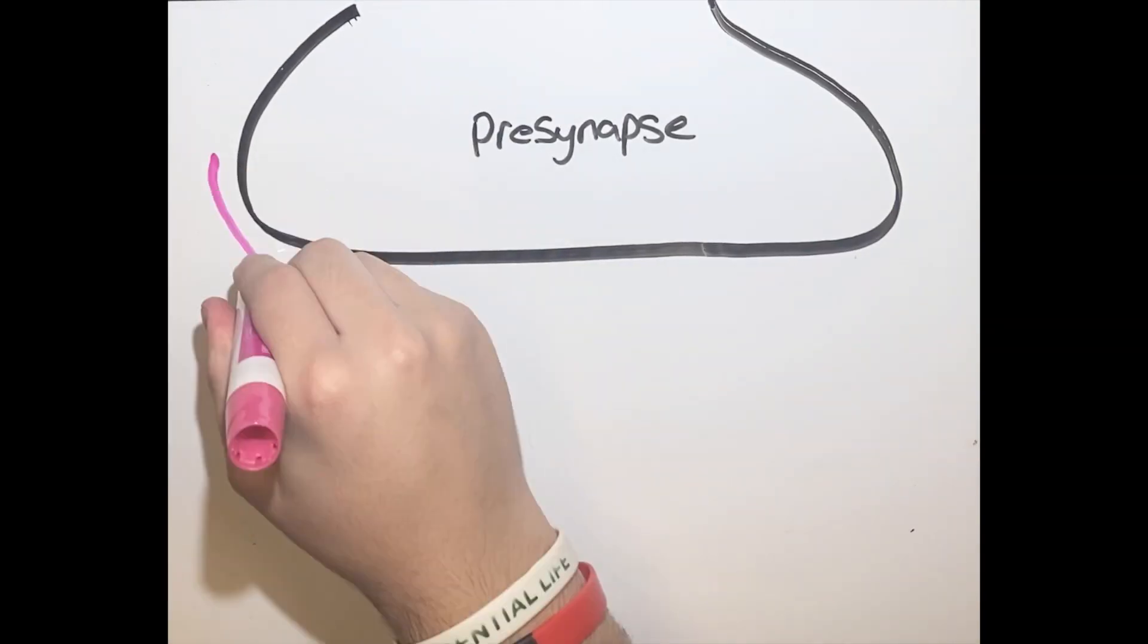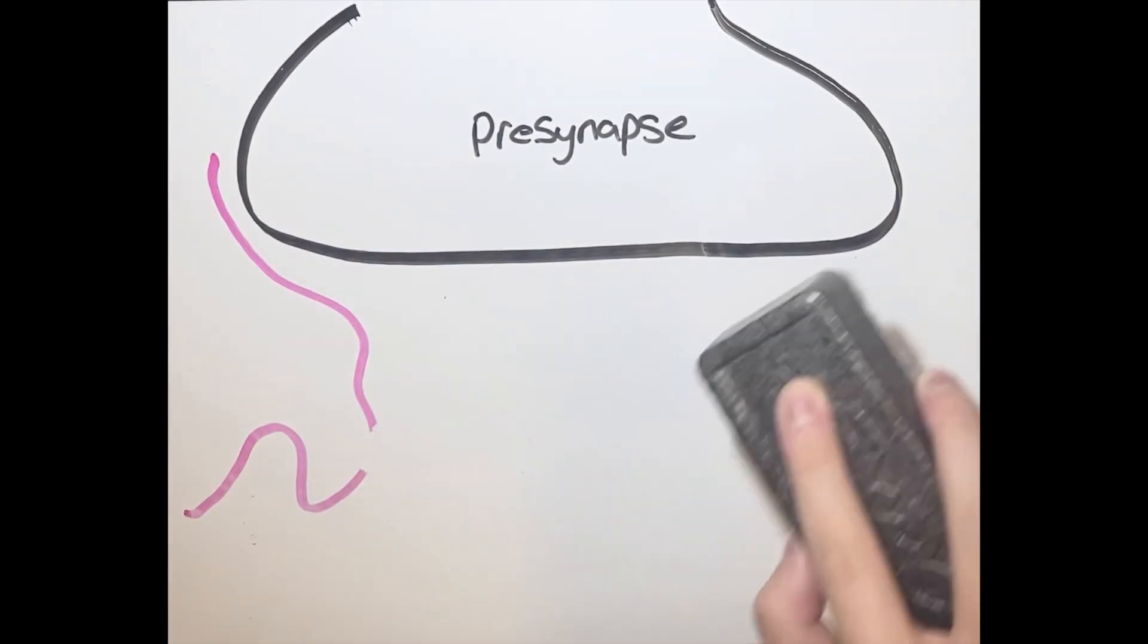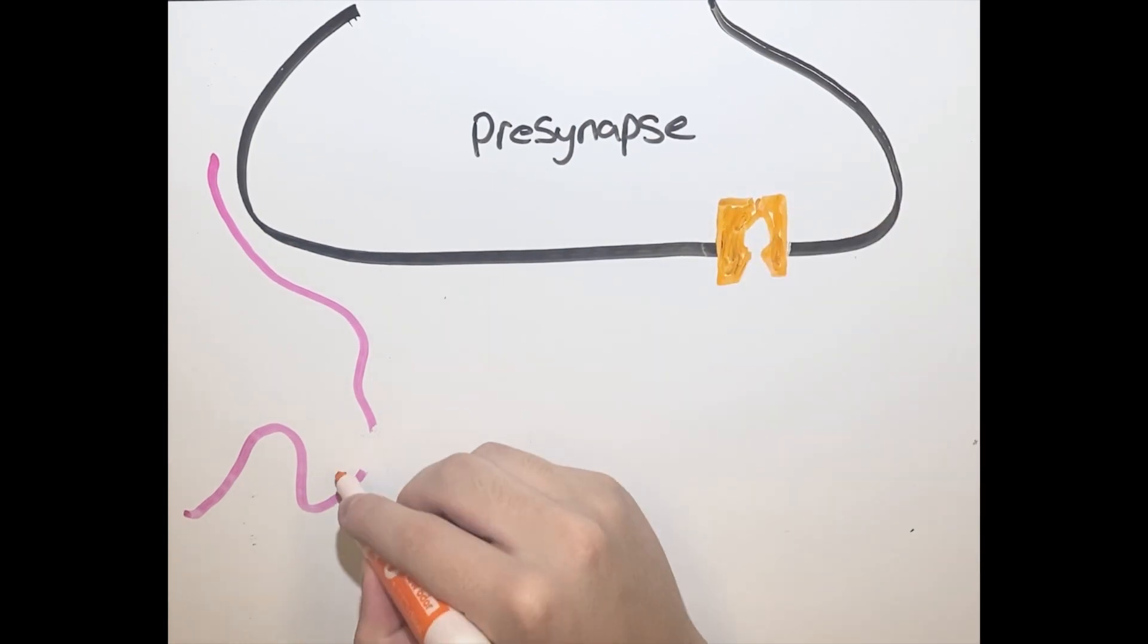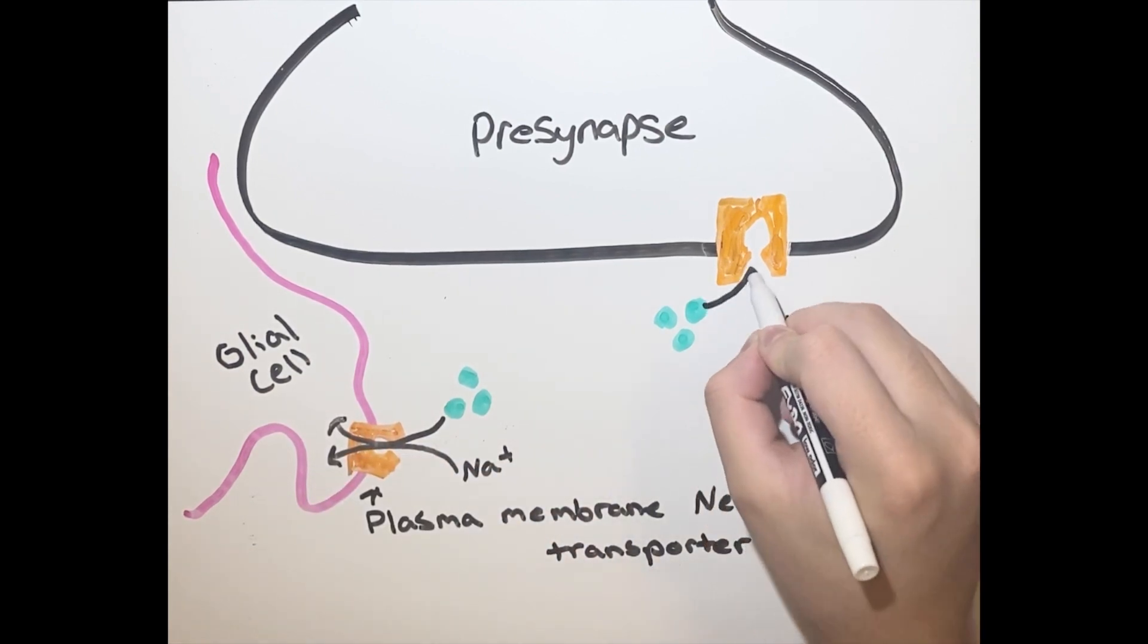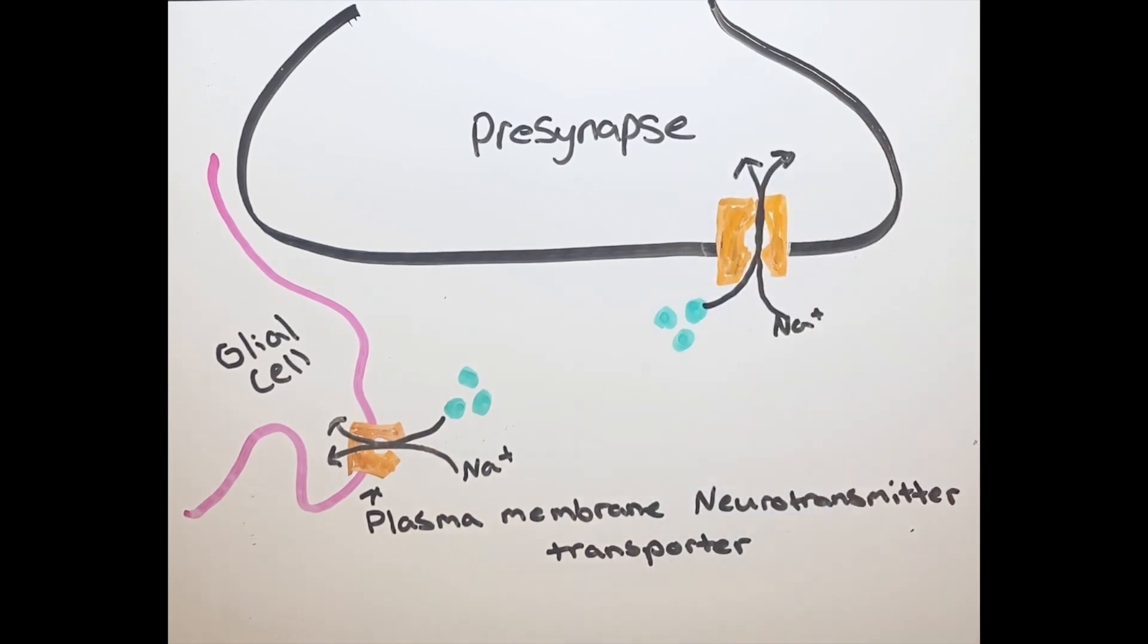The other way that neurotransmitters are cleaned up is through reuptake, which will recycle the neurotransmitter without breaking it down. On the presynaptic membrane, along with glial cells, there are plasma membrane neurotransmitter transporters, which are channels that allow the neurotransmitter to enter the cell so that they can be repackaged and used again. These channels are symporters, which means not only do they take neurotransmitters into the cell, but they also pull in sodium ions at the same time.